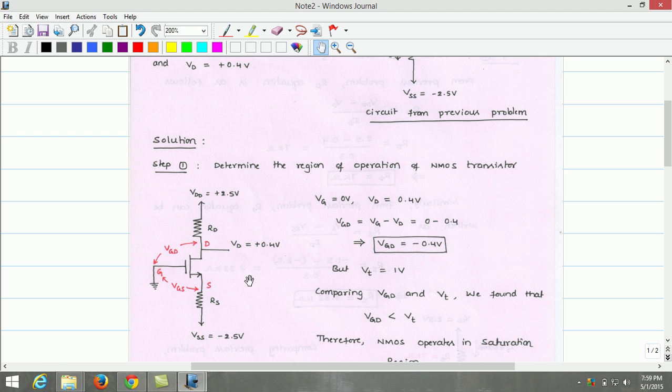However, the threshold voltage of the NMOS transistor is 1V. Comparing Vgd and the threshold voltage of the MOSFET, we found that Vgd value which is minus 0.4V is lesser than the threshold voltage of the transistor that is 1V.